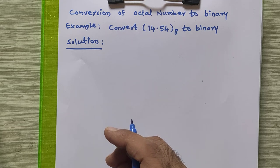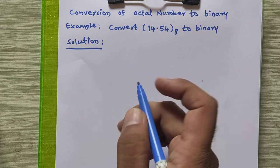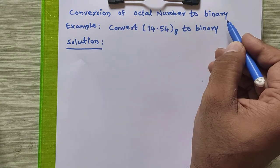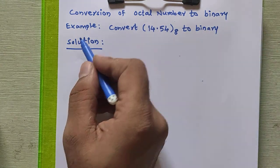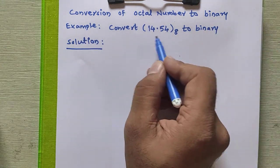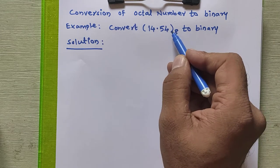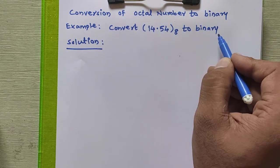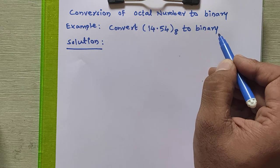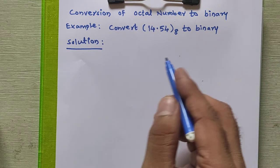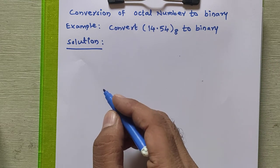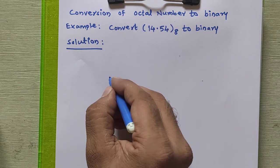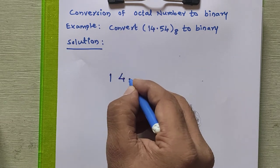Hello everyone. In this tutorial we are going to study how to convert an octal number to binary. Consider this number given to us: 14.54 octal. We have to convert this number to binary. Now, how to convert it into binary? For each octal digit given to us — that is 1, 4, point, 5, 4 — we have to write the three-bit binary equivalent.